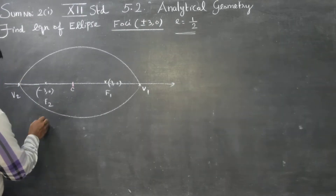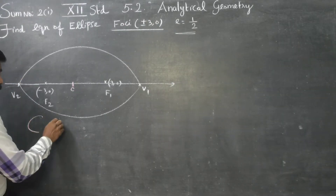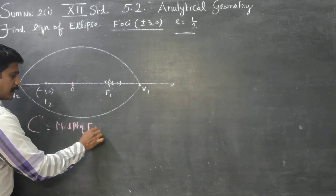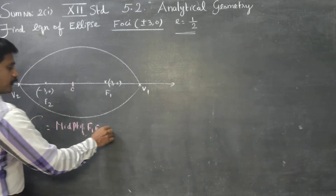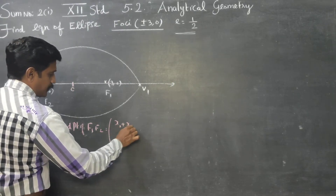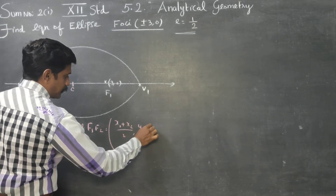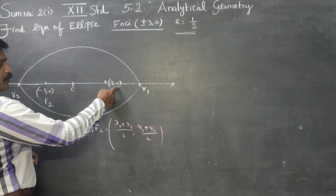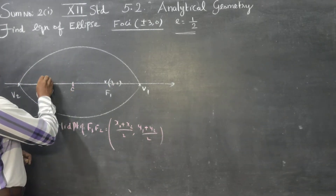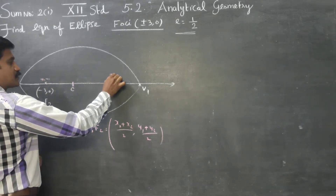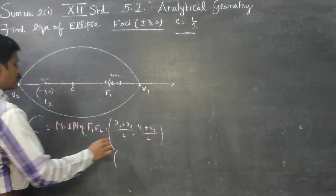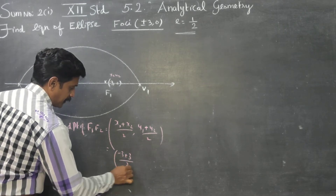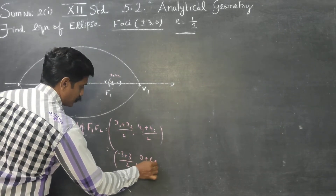My center is equal to the midpoint of F1 and F2. Midpoint formula: x1 plus x2 by 2, y1 plus y2 by 2. This is my x1, y1 and this is my x2, y2. My answer will be minus 3 plus 3 by 2, 0 plus 0 by 2.